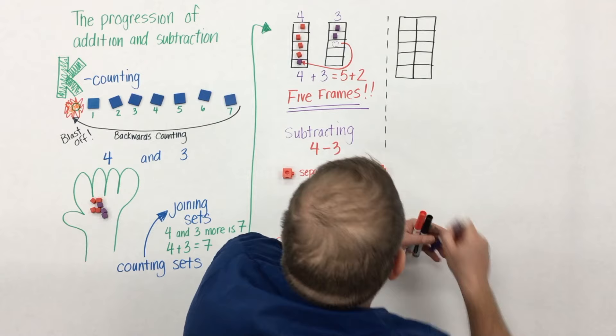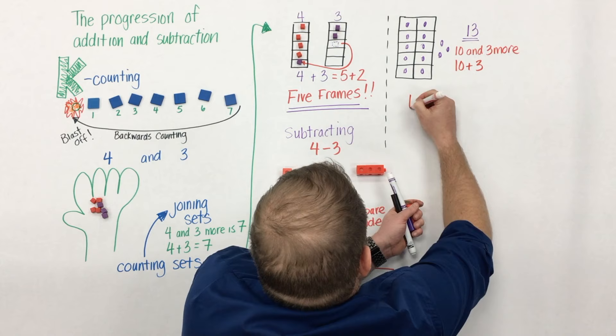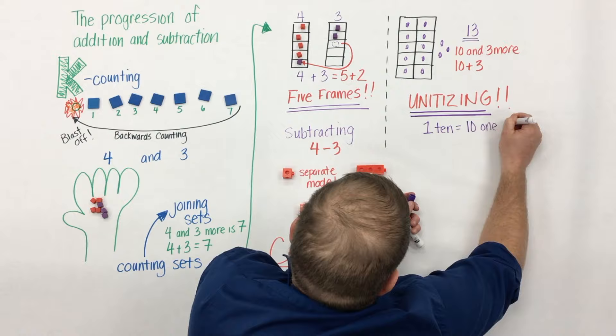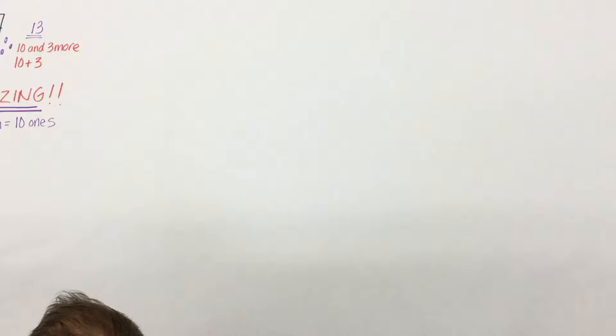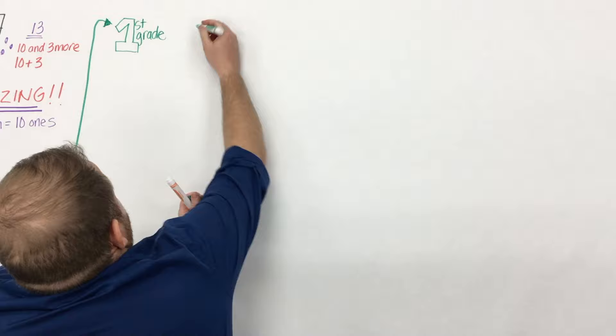As students are working on addition and subtraction they're simultaneously working on this understanding of counting and collecting and grouping things in ten. So here thirteen could be seen and should be seen as ten and three more or ten plus three. It's here that this whole idea of unitizing is introduced. It's massive and we need to make sure that students don't leave kindergarten and first grade without this understanding conceptually.